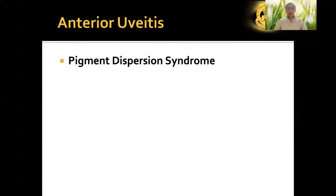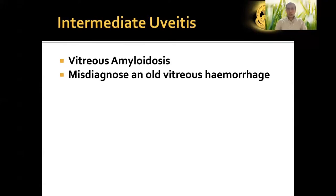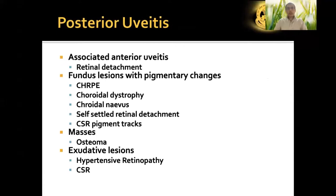In summary: for anterior uveitis, pigment dispersion syndrome is the key mimic. For intermediate uveitis, vitreous amyloidosis and old vitreous hemorrhage can be misdiagnosed as vitreitis. For posterior uveitis, conditions to differentiate include retinal detachment missed on incomplete examination; pigmentary lesions such as congenital hypertrophy of RPE, dystrophies, nevi, self-settled detachment, and pigment tracts; masses such as choroidal osteoma mistaken for granulomas; and exudative lesions such as hypertensive retinopathy and central serous chorioretinopathy mistaken for VKH. Thank you.